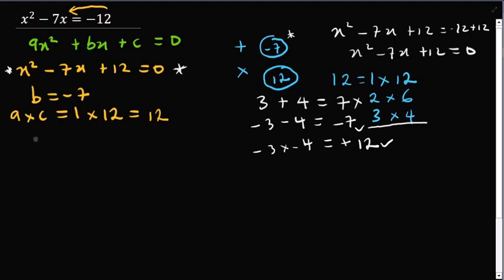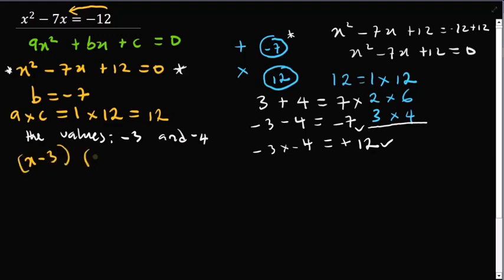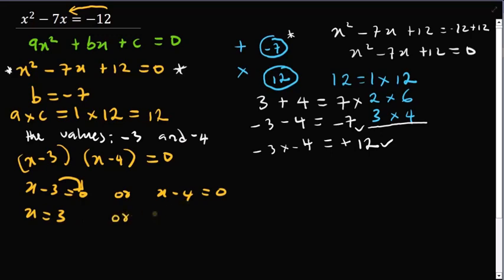We can factor as x minus 3 and x minus 4 equal to 0. Solving for x: x minus 3 equals 0 or x minus 4 equals 0. Collecting like terms — moving 3 to the other end gives x equals 3. Adding 4 to both sides of the second equation gives x equals 4. Therefore, x is equal to 3 or 4.